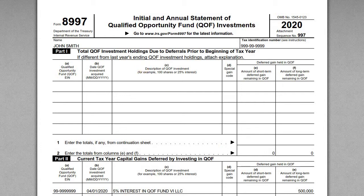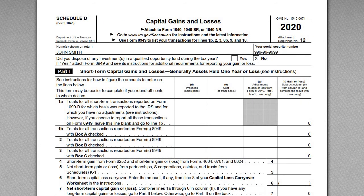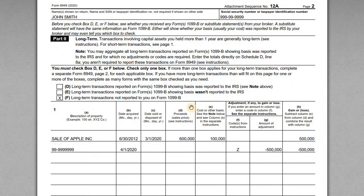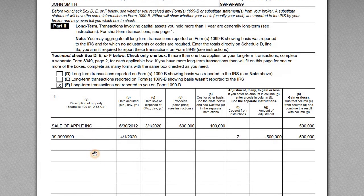Starting with the 8949 itself — in this example, John is the taxpayer. He's a single taxpayer, and during the year he sold Apple stock for a $500,000 gain. When he sold the stock, he decided he wanted to invest in a QOF to defer the long-term capital gain. So that's the fact pattern. How does he report this to the IRS?